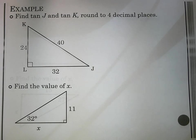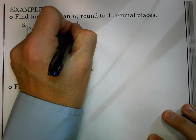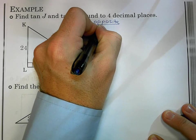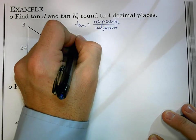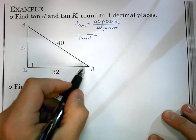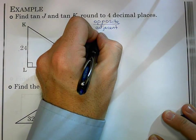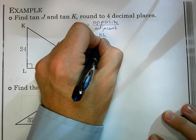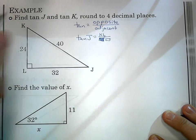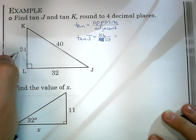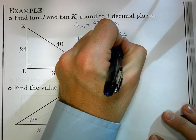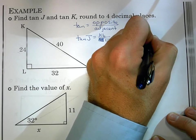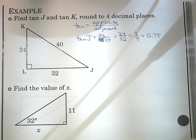First one, we're looking at tangent of J and tangent of K. We said earlier tangent stands for the opposite over the adjacent. When I say tangent of J, I'm looking at the opposite side, which is KL, over the adjacent side, which is LJ. What values are those? It's 24 over 32, which we can reduce. That becomes 3 fourths, which is 0.75.